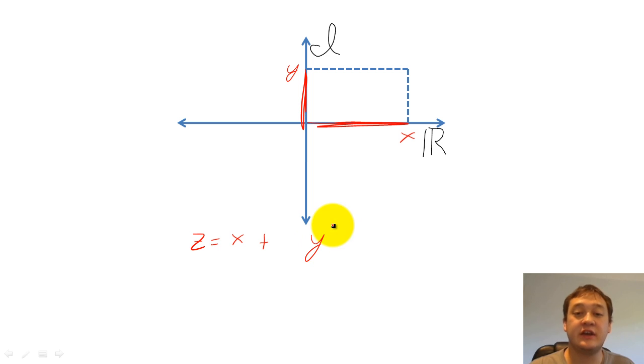The letter j equals the square root of negative 1, and it is attached to the imaginary part in Cartesian coordinates. In conventional notation, we say that x is the real part of z, and that the imaginary part of z is y.